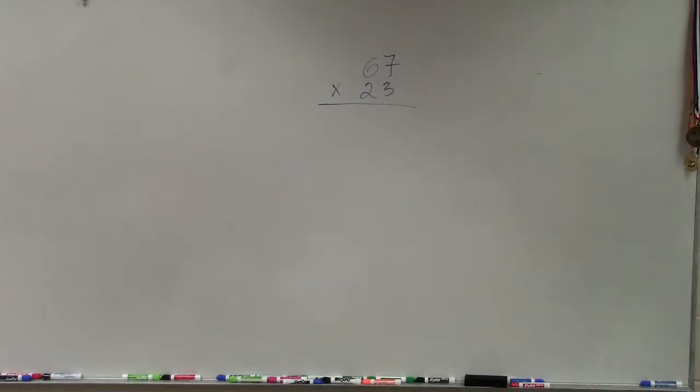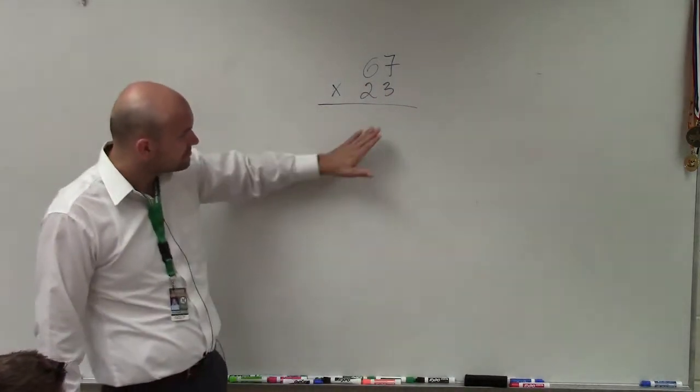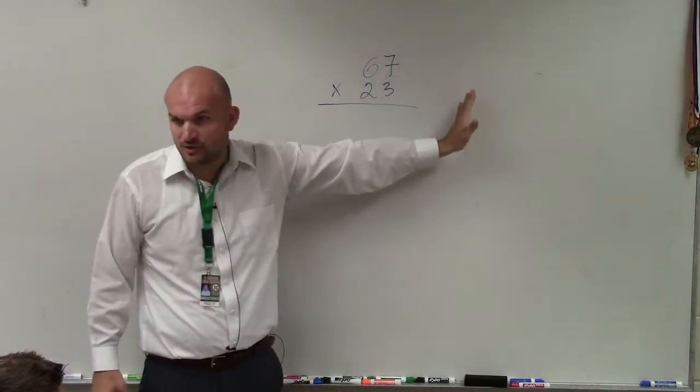So over here, I have 67 times 23. So in multiplying multi-digit numbers, again, just like the addition, what we're going to do is we're going to start all the way over to the right.